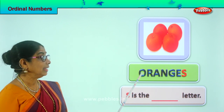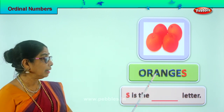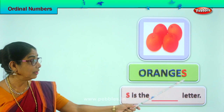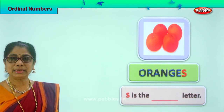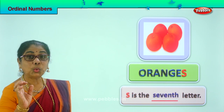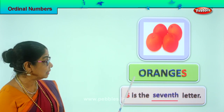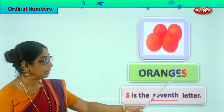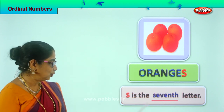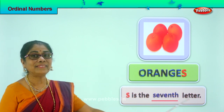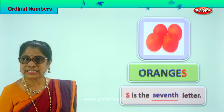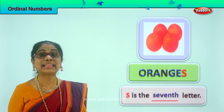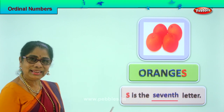Look at the spelling of oranges: O-R-A-N-G-E-S. Now which is the letter that is colored? The last letter — S. What is the position of the letter S? 1st, 2nd, 3rd, 4th, 5th, 6th, 7th. So you read it as: S is the seventh letter. Spell seventh: S-E-V-E-N-T-H, seventh.